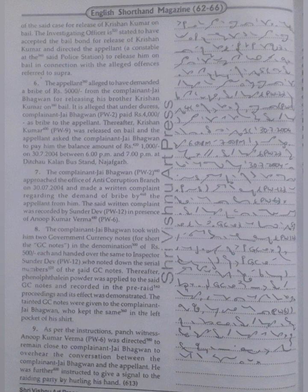The complainant Jai Bhagawan took with him two government currency notes, for short the GC notes, in the denomination of Rs. 500 each and handed over the same to Inspector Sundar Dev (PW12) who noted down the serial numbers of the said GC notes. Thereafter, phenolphthalein powder was applied to the said GC notes and recorded in the pre-raid proceedings and its effect was demonstrated.